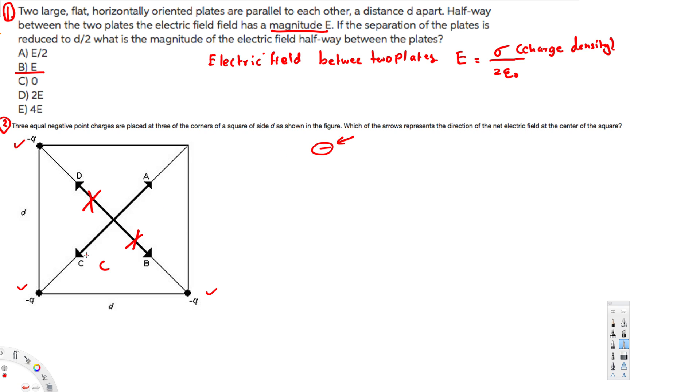the C arrow is the answer. So arrow C is the direction of the net electric field, and that's how we do this kind of problem. I hope you guys like this video. See you next time!